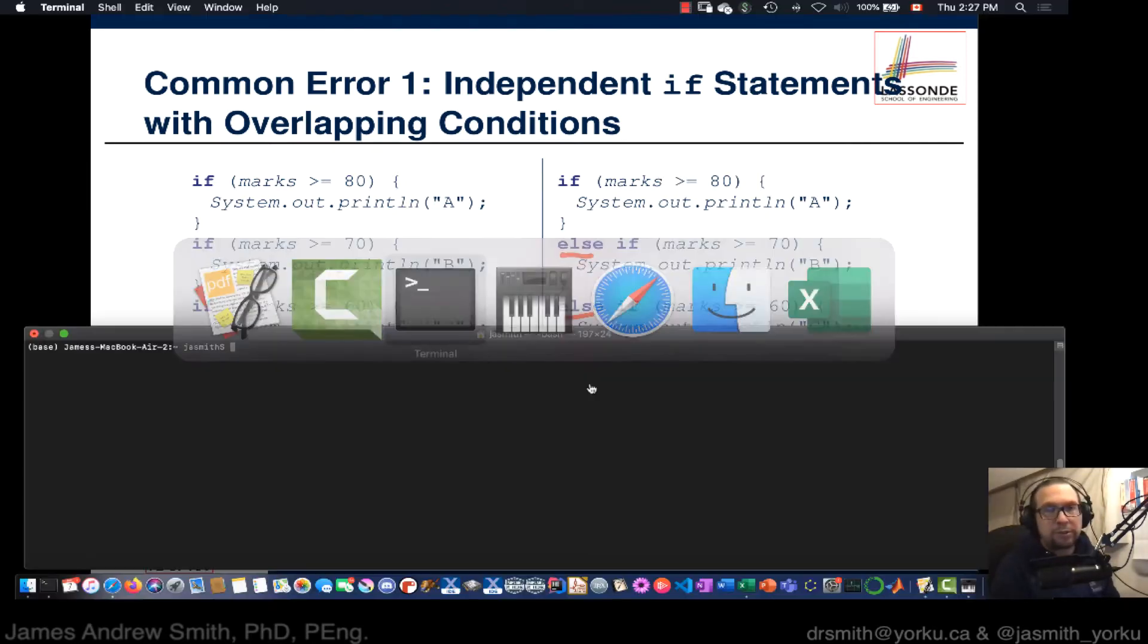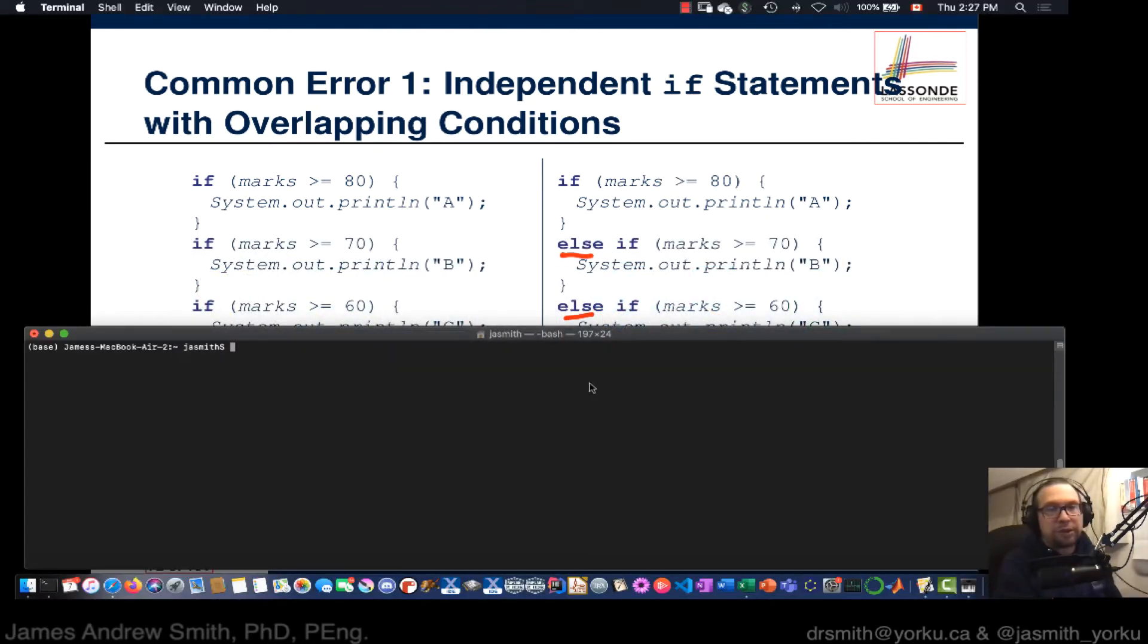So I'm going to go into JShell. So we're going to type this up. So I'm going to say, int marks is equal to 84. There we go. So I've got a variable called marks. Now I'm going to go,